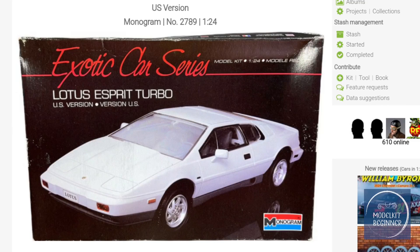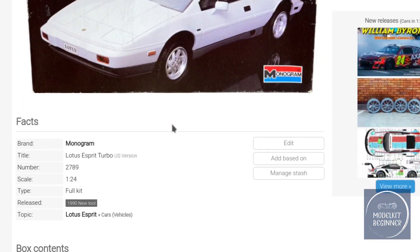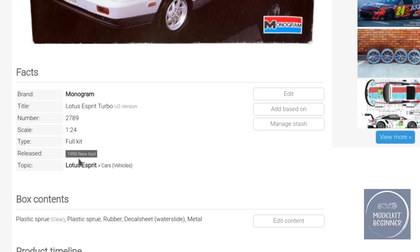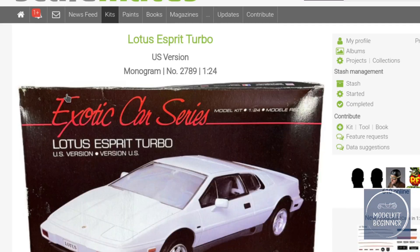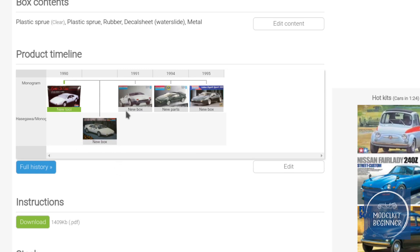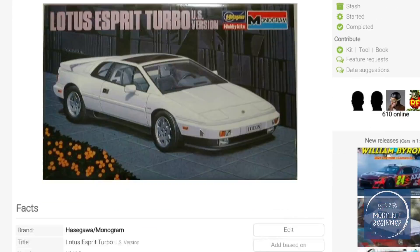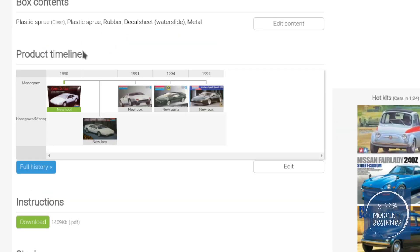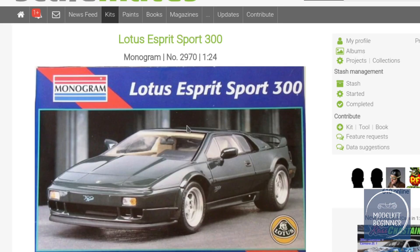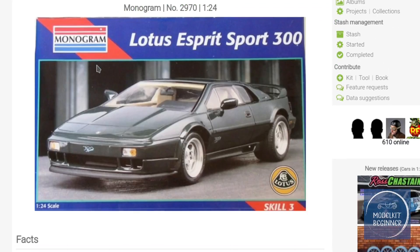Here we are with the Lotus Esprit Turbo on Scalemates. Scalemates is a database where lots of modelers enter their models and use it as a reference for model kits, paints, and more. I highly recommend scalemates.com. This kit came out in 1990—that was the first time. In 1990 there was also a Monogram-Hasegawa co-branded kit. Then we had 1991, 1994, and the latest one was in 1995 as the Lotus Esprit Sport 300, basically the same design. That was the latest iteration of this particular box art. Monogram shortly after ceased to exist.